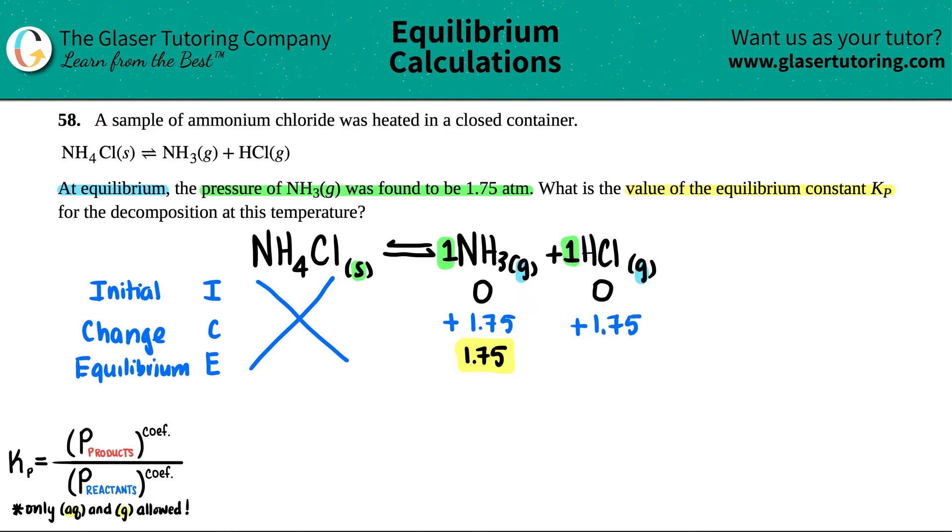For the NH3, there was no coefficient, so that means I had one of them. For the HCl, I didn't have a coefficient, so that was also one of them. The coefficients are the same, so it's a one-to-one ratio. If this was 1.75, this also would have been 1.75. If you have the same coefficient and the ratios are the same, you will add the same amount or get rid of the same amount. Zero plus 1.75 is 1.75. Now we have all the equilibrium values.